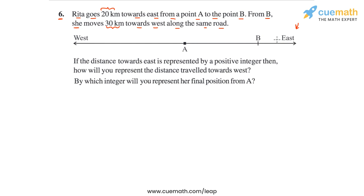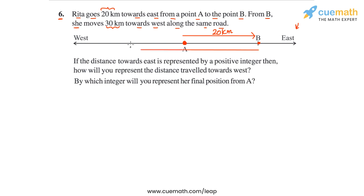Let's draw her journey on the figure that is given. Rita goes 20 km east from point A to point B, so we represent this part of the journey by drawing an arrow from A to B — this is 20 km. Then from B, she moves 30 km towards the west, ending up at a new point. Let's call this point C. So this part of the journey is 30 km long.